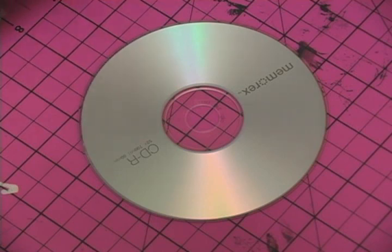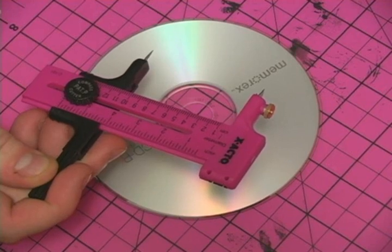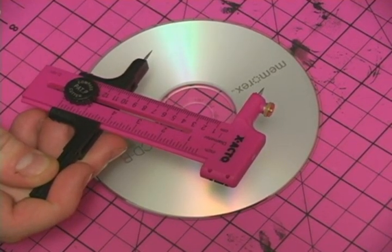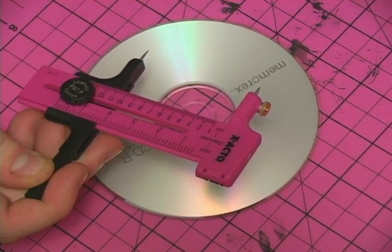I've got a couple instruments here. This is a compass cutter, and basically what it does is cuts a circle out on a sheet of paper. Now one of the tricks that I have right here...